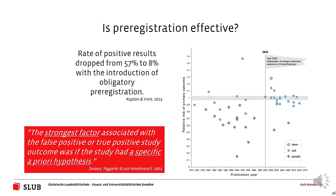In another study, Soderberg et al. looked at the quality of registered reports — the gold standard of pre-registration. Experienced reviewers were given scientific articles, and registered reports actually outperformed any other non-registered studies with regards to all quality criteria, such as importance, alignment, and rigor. Even the data we have indicates that pre-registration is quite effective in counteracting the issues and problems mentioned earlier.